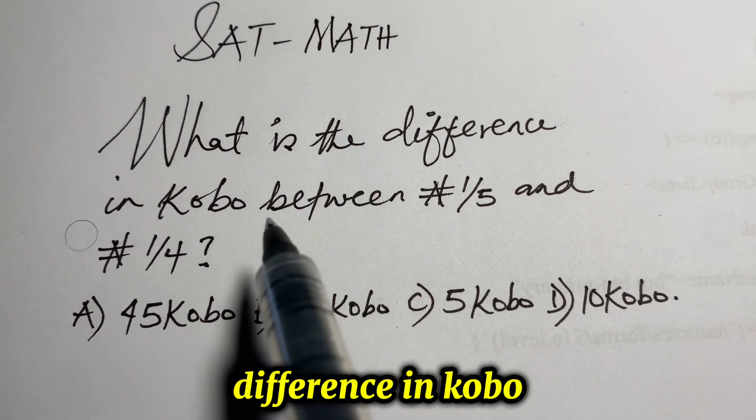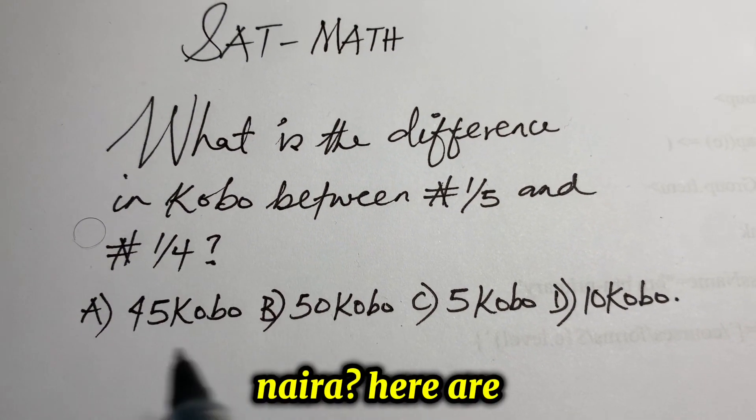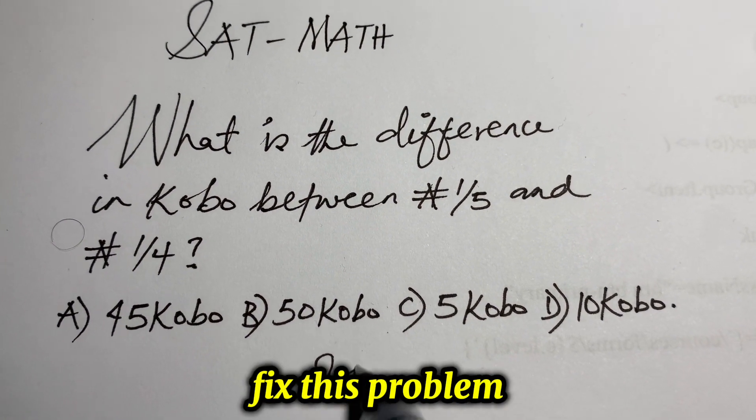What is the difference in kobo between 1 over 5 naira and 1 over 4 naira? Here are a couple of options we have here. You can pause the video and fix this problem in one second.